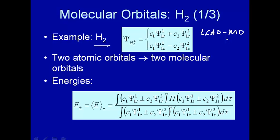These are atomic orbitals, one on each atom. For the H2 molecule, we'll combine them using C1 and C2 as combination coefficients, where psi_1s1 is the atomic 1s orbital on atom 1, and psi_1s2 is the atomic 1s orbital on atom 2. We'll combine them in two ways: adding them and subtracting them.